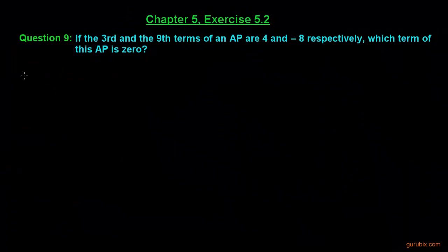This is the 9th question of exercise 5.2 of chapter 5, and this question says if the 3rd and the 9th term of an AP are 4 and minus 8 respectively, which term of this AP is 0? So this is a very good question. Let us see how to solve this question.